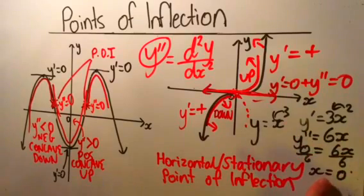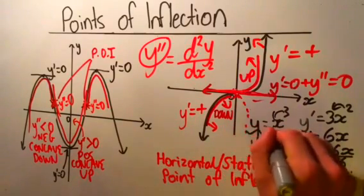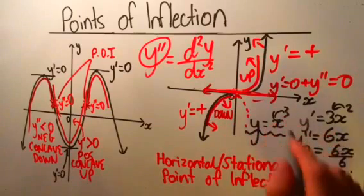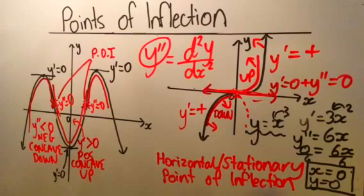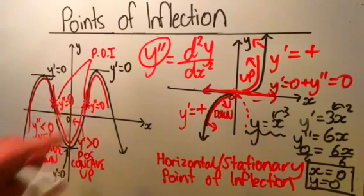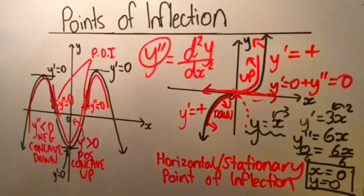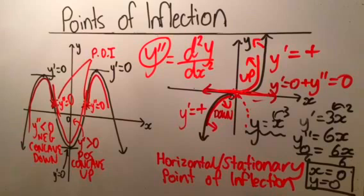At x equals zero, if we substitute back into our original equation, we get y equals zero cubed, which is also zero. So the coordinate is the point where x equals zero and y equals zero — that is a stationary point of inflection. It's not just a point of inflection like the other two points; it is also stationary, and the gradient is also zero there. That's all you need to know about points of inflection. The next thing we're going to look at is how to use that to help us sketch curves or functions. Thanks guys, don't forget to share and subscribe.